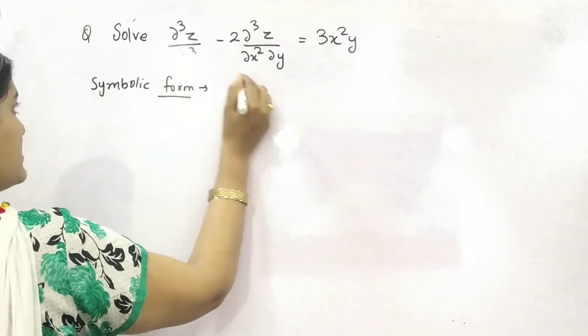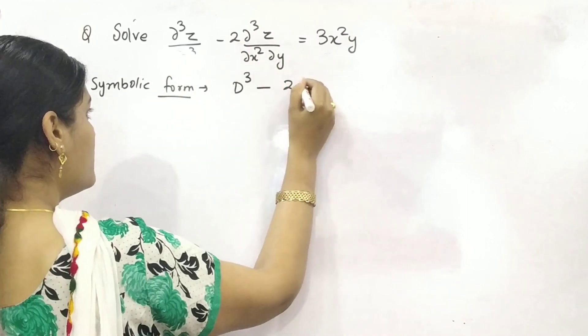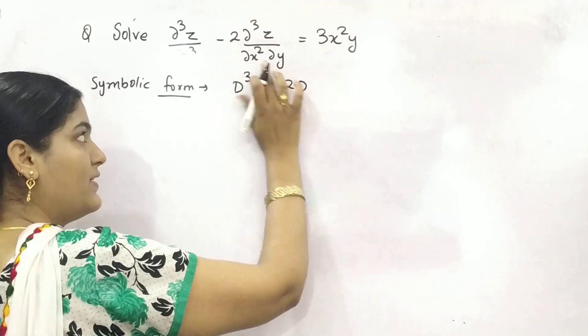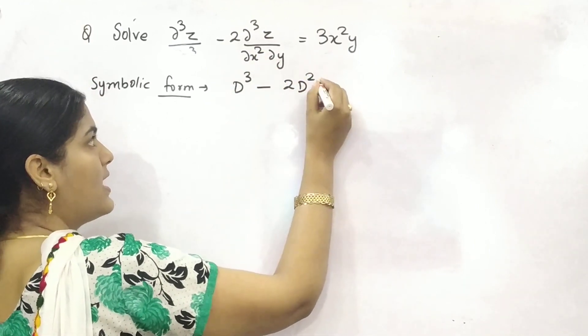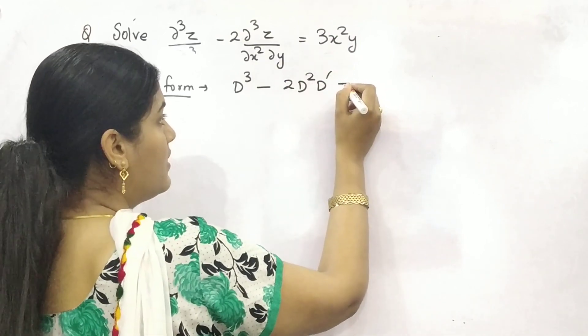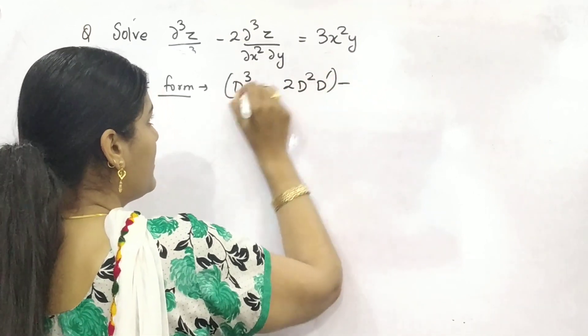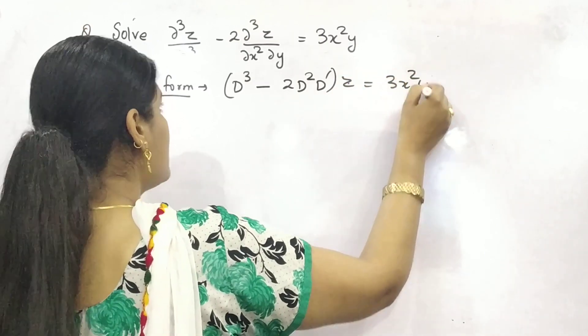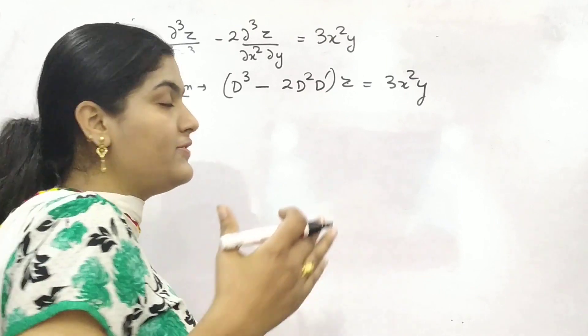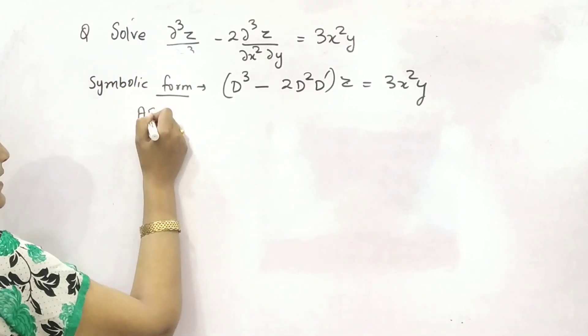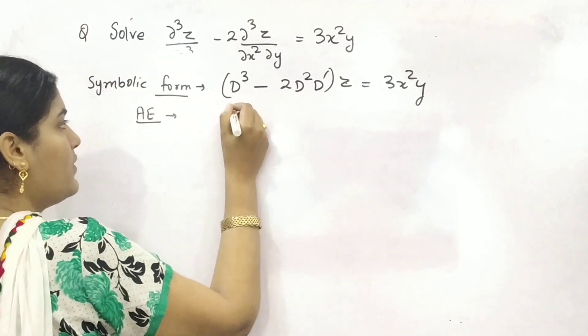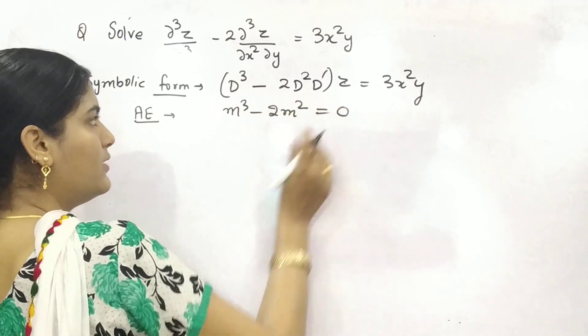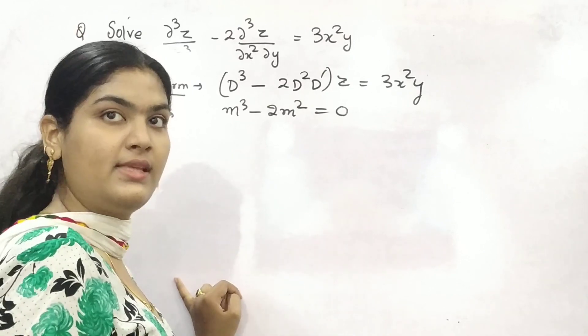So this is d³ - 2, because x is differentiating twice, differentiated twice. So d², y is 1, so d'. It is the function of z. So this is your symbolic form. Then after you need to find out the auxiliary equation. So m³ - 2m² = 0, because d' is 1 and d is m.